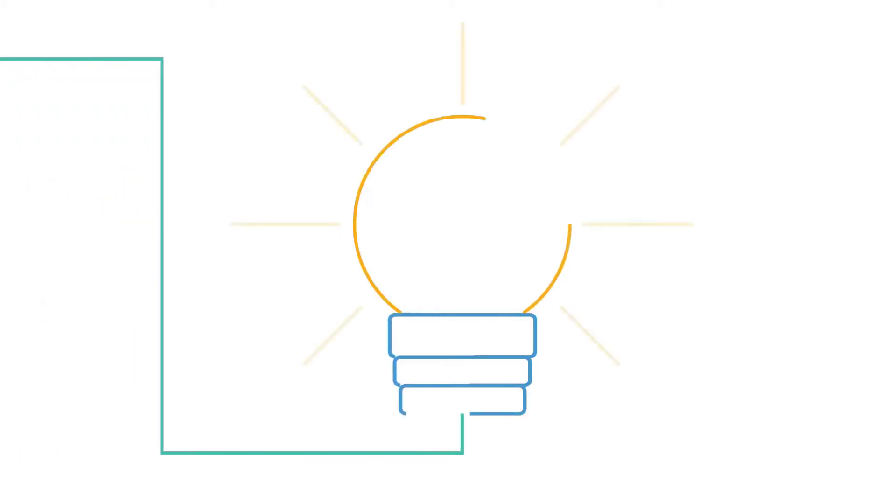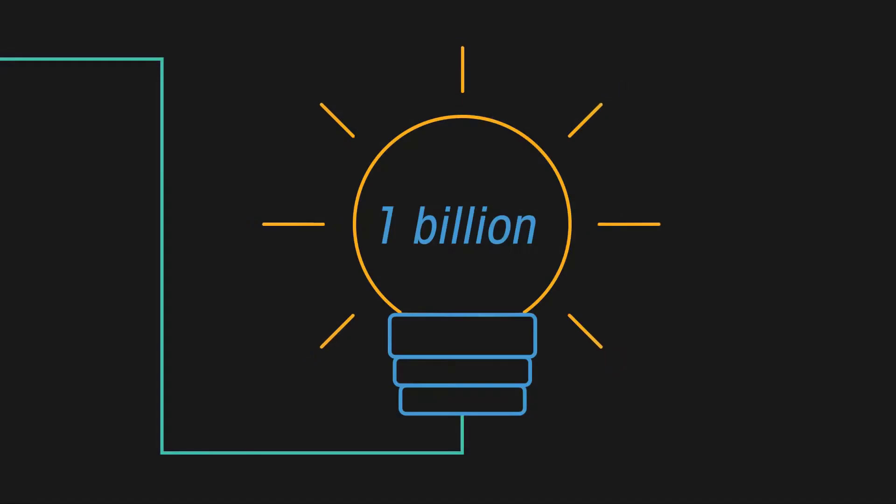The flick of a switch—that's how easy it is to get electricity, right? If you're one of the lucky ones, then yes. But in 2017, there are still over 1 billion people who do not have access to electricity.